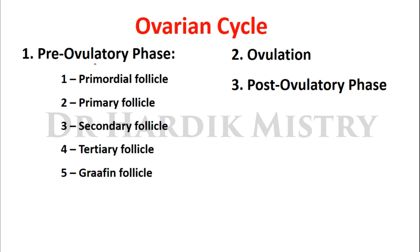There are three phases of the ovarian cycle: the preovulatory phase, ovulation, and the post-ovulatory phase. In the preovulatory phase, follicles pass through different developmental stages. Starting from the primordial follicle, it converts to a primary follicle, then to a secondary follicle, tertiary follicle, and finally the Graafian follicle.